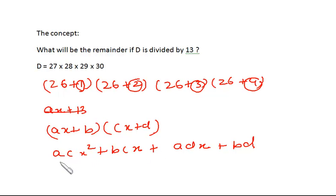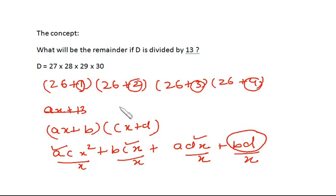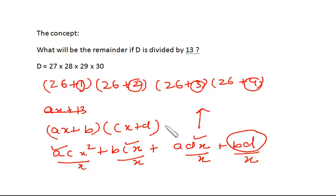If I wish to divide this entire expression by x, the term acx² is a multiple of x so gives no remainder. The term bcx is a multiple of x — no remainder. The term adx is also a multiple of x — no remainder. The remainder comes from bd only. Applying this same logic to our problem: multiplying all those terms gives a remainder of 1 × 2 × 3 × 4.